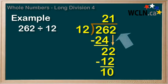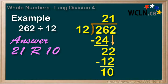And at this point, we don't have any dividend digits left. So we know that we're done with our division. We're left with a remainder of 10 down here. So our answer would be 21 with a remainder of 10.